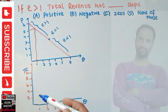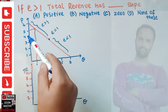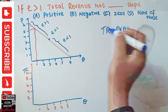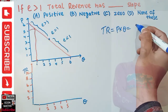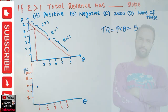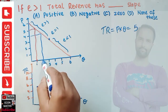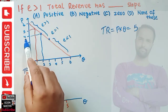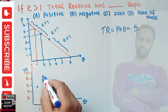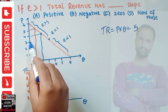When price is five, quantity demanded is one, so total revenue is price into quantity: five times one equals five. When price falls to four, quantity demanded increases to two, so total revenue is four times two, which equals eight. We plot these points on a graph to build our total revenue curve.